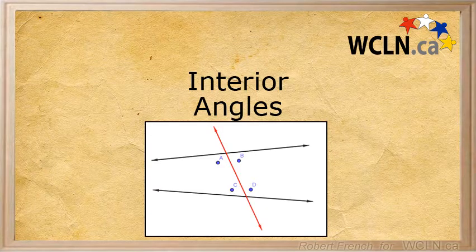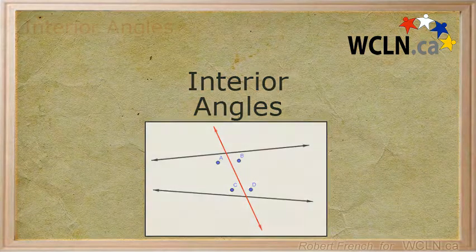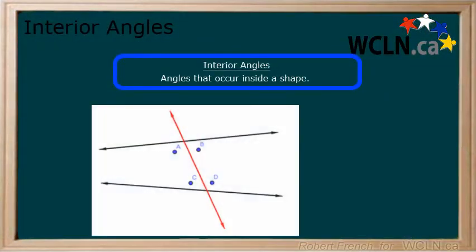In this tutorial we will be learning about interior angles and the different types of interior angles you will come across. Interior angles are angles that occur inside a shape. When angles are created by a transversal line, the interior angles are all of the angles inside the two lines crossed by the transversal, as seen here.